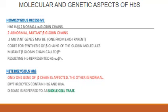There are two abnormal mutant beta globin chains, which are represented in the hemoglobin of sickle cell anemia as alpha 2 beta S 2. In heterozygous hemoglobin S, only one gene of the beta chain is affected whereas the other is normal. The erythrocytes will contain both normal hemoglobin A and hemoglobin S, and the condition is referred to as sickle cell trait.